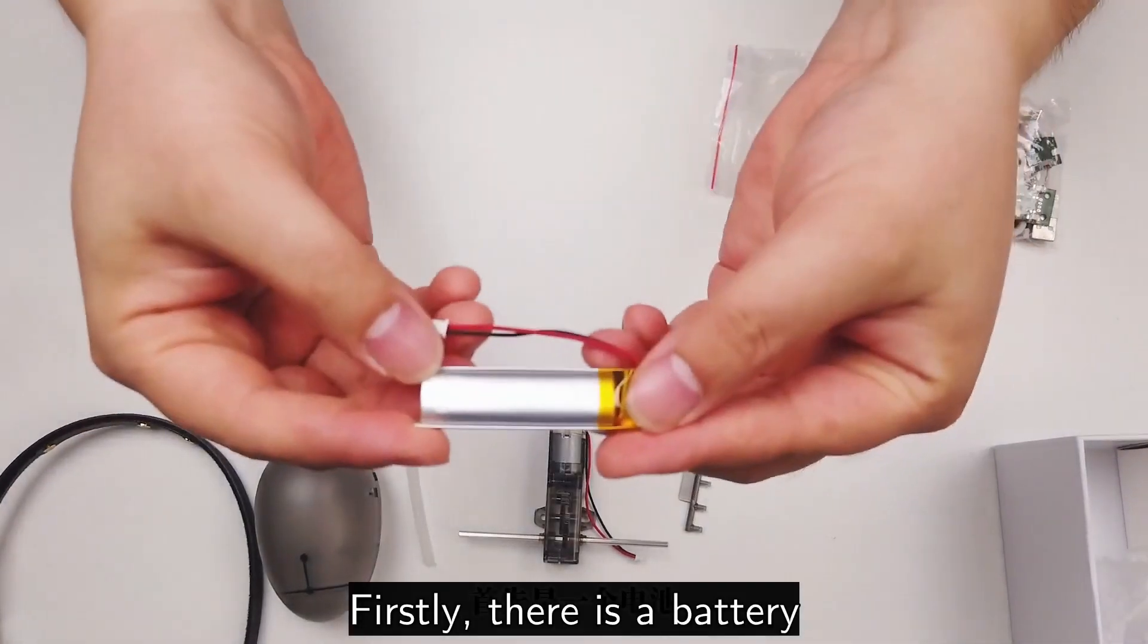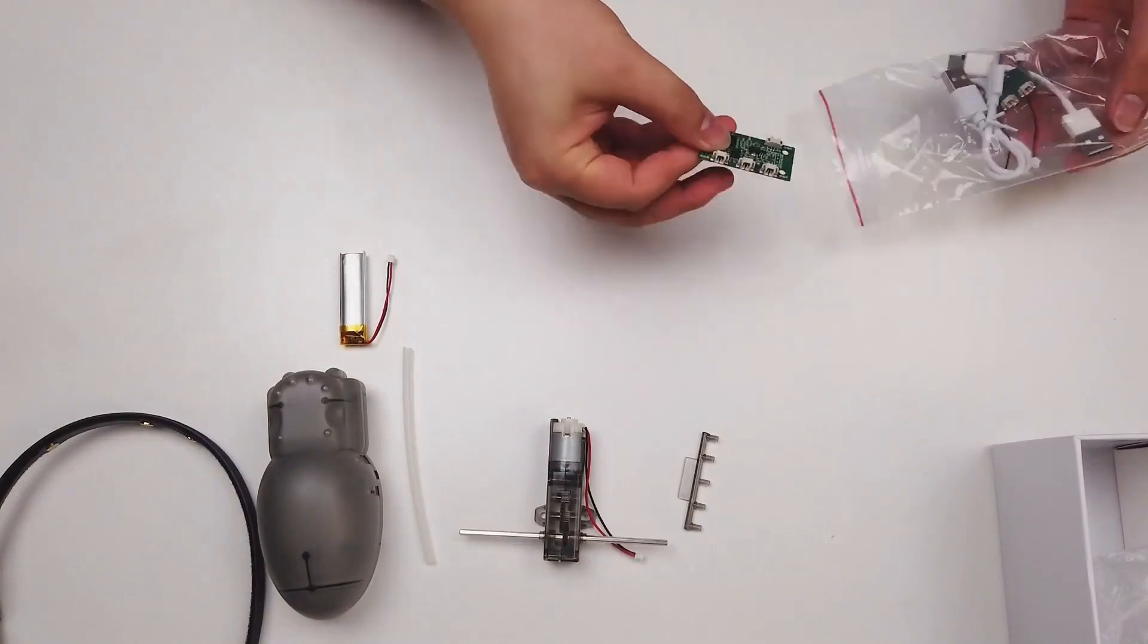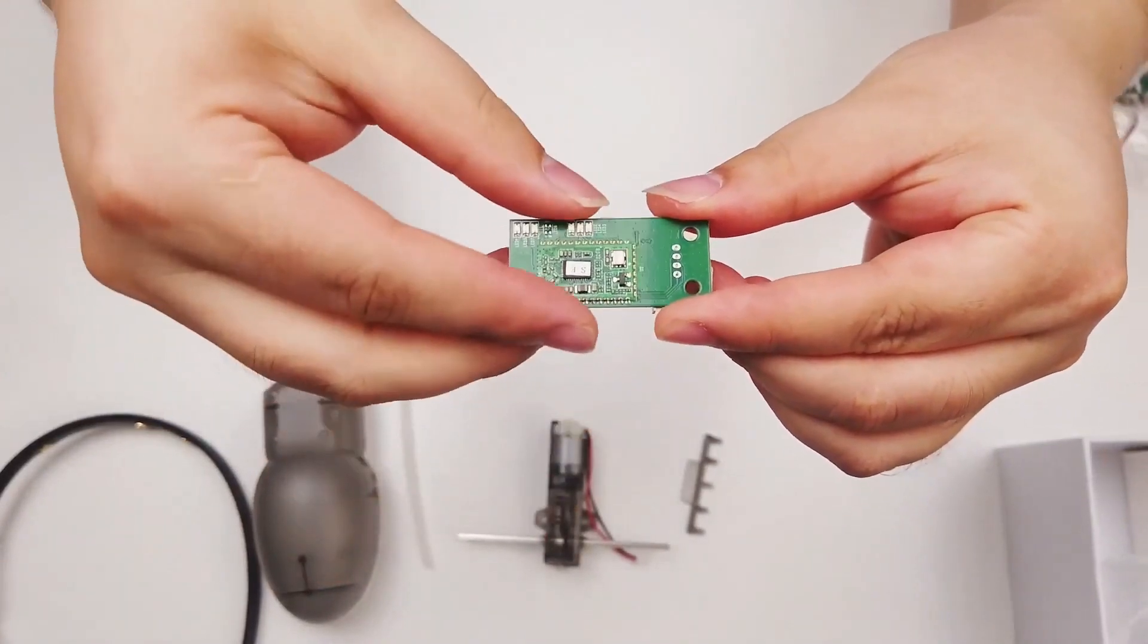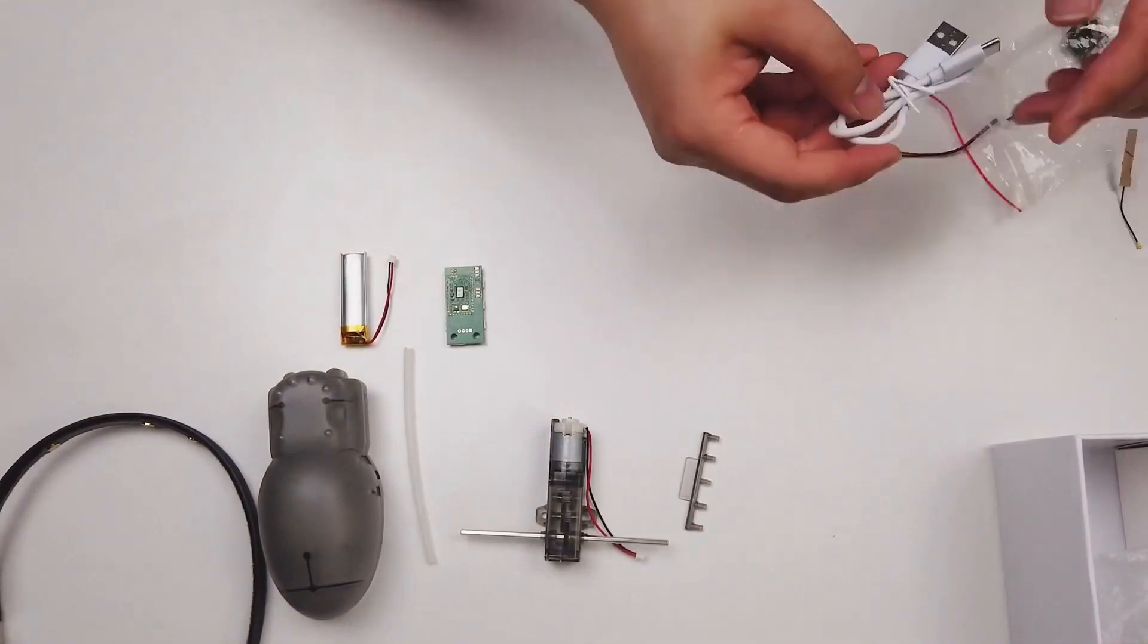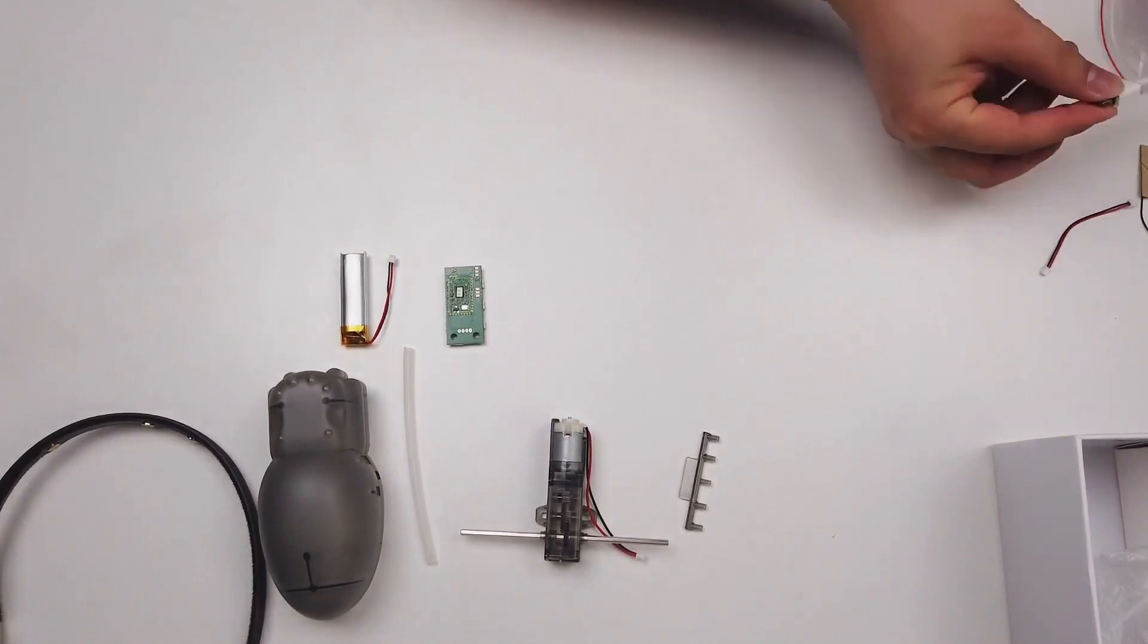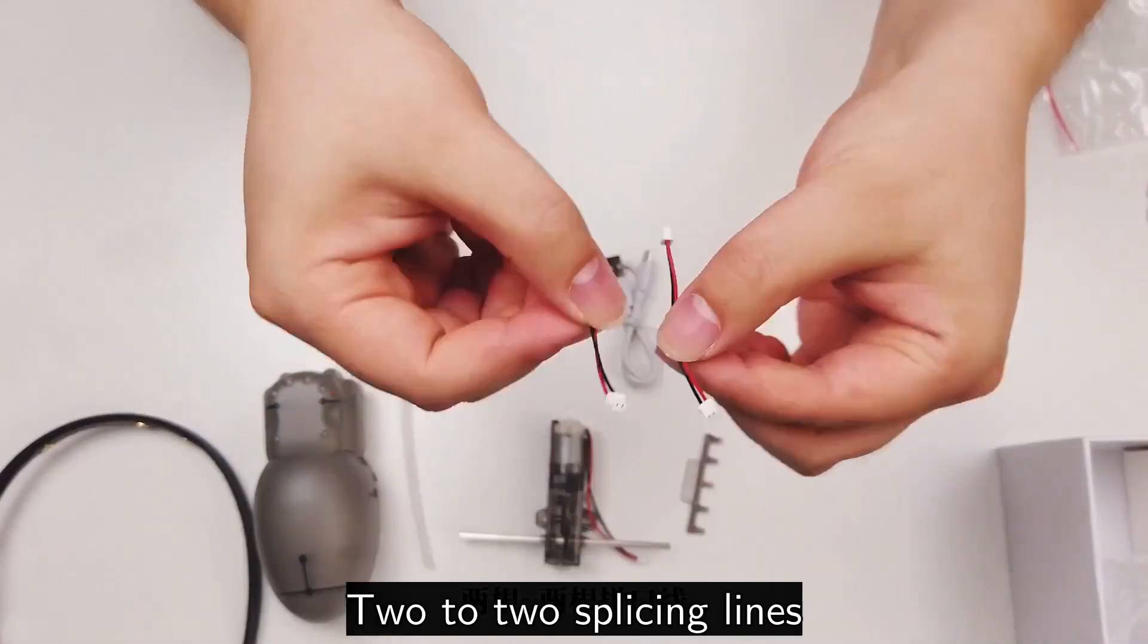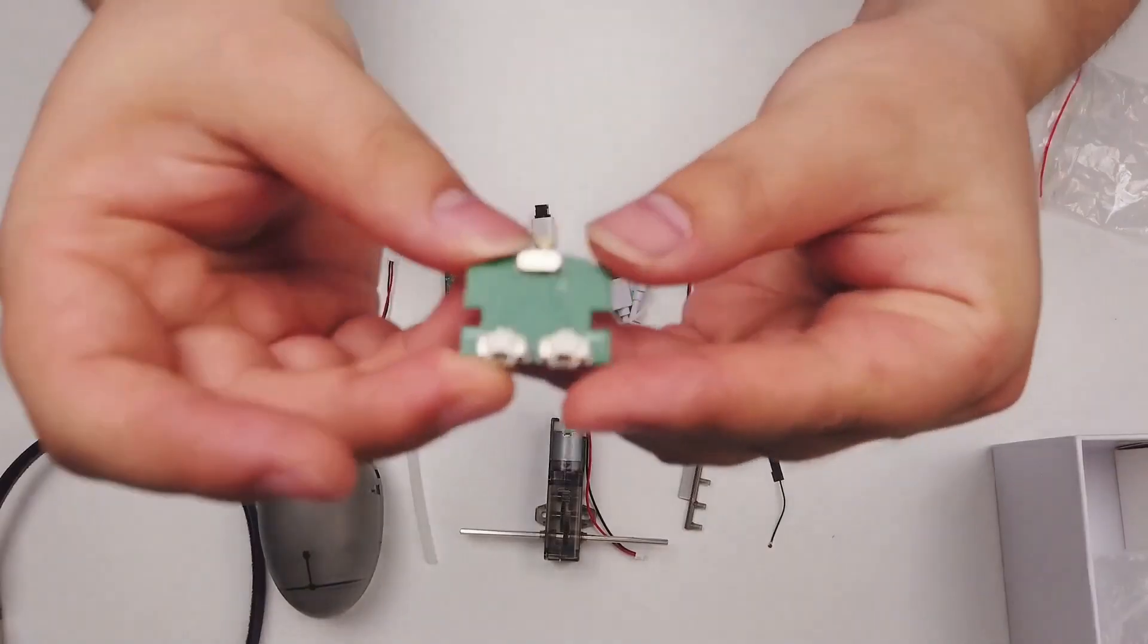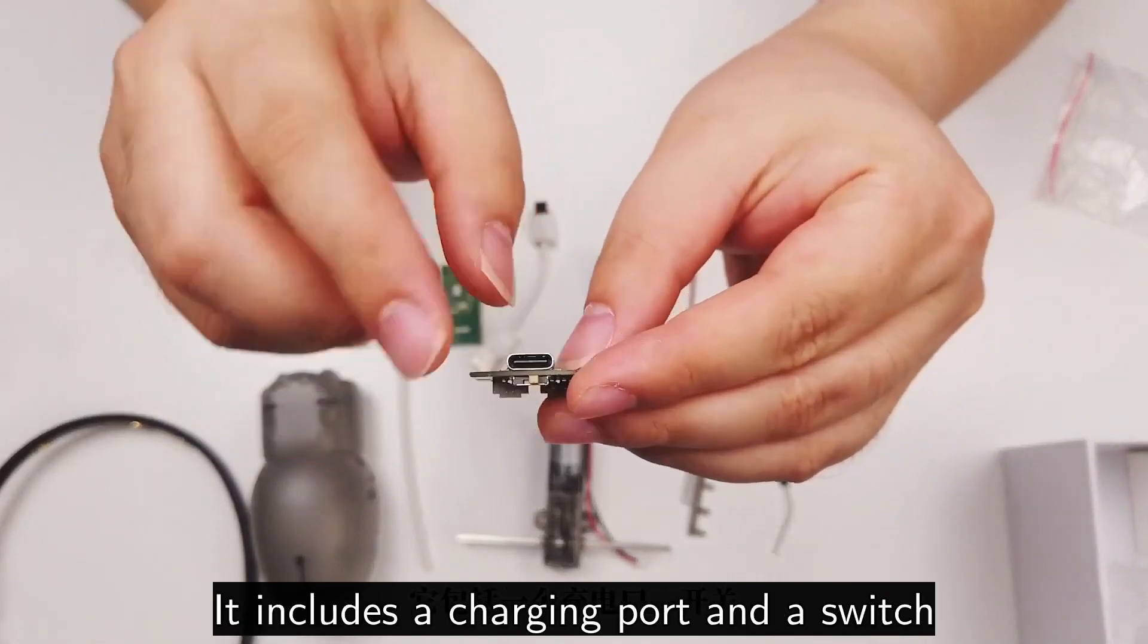Firstly there is a battery, then there is a motherboard. Charging cable - it charges the spider. Two-to-two splicing lines, an antenna.